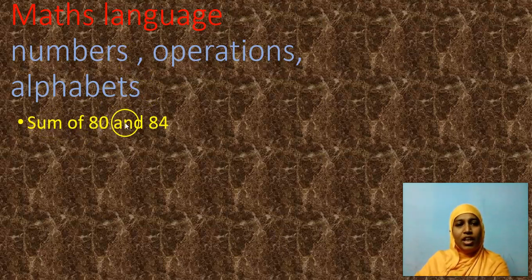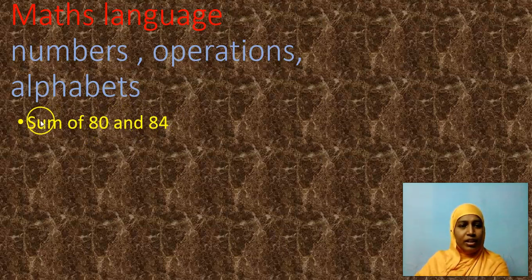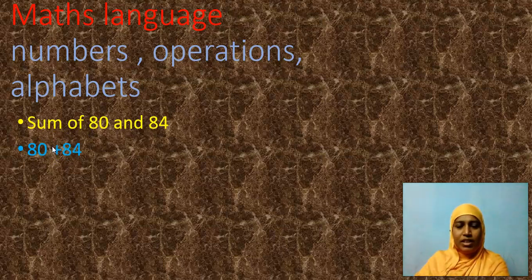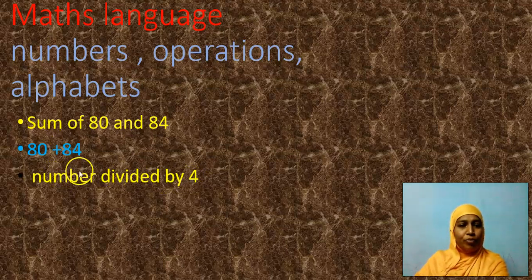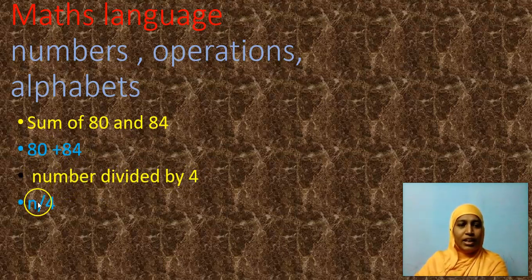Sum of 80 and 84. It takes more space to write. But if I write in math language, how will I write? It's very simple. 80 plus 84 with a symbol, plus symbol. When it comes to number divided by 4, instead of writing the whole word number, we use the letter N, N by 4.